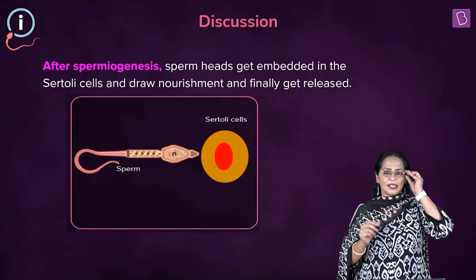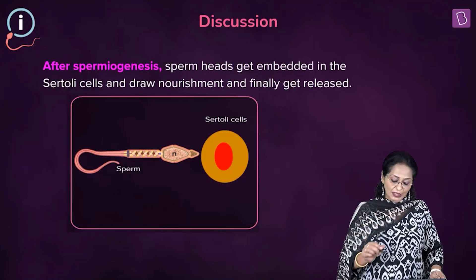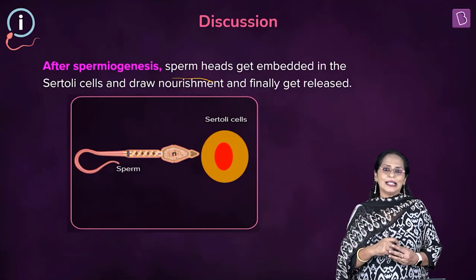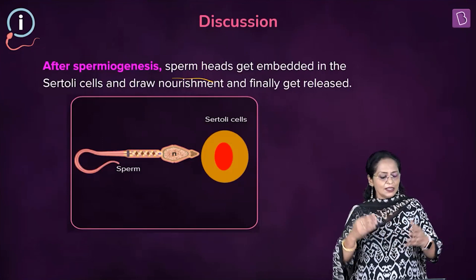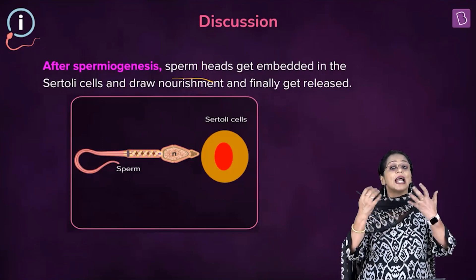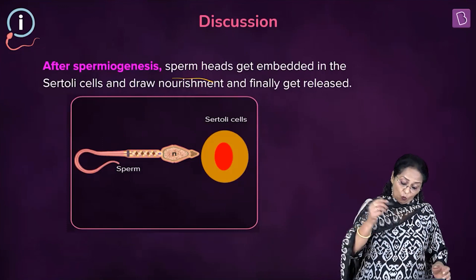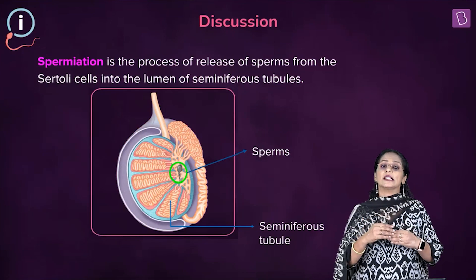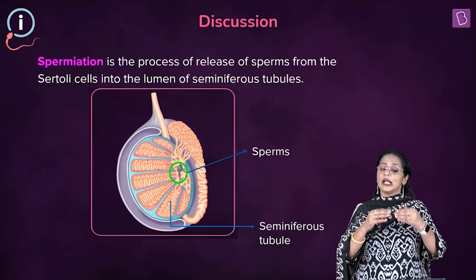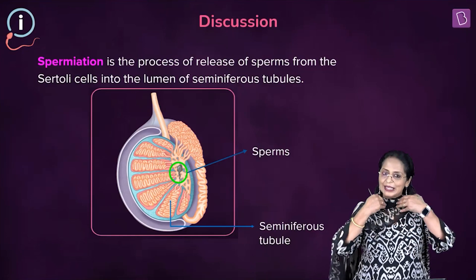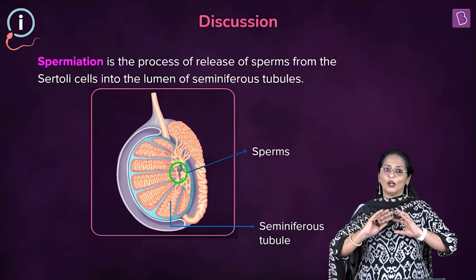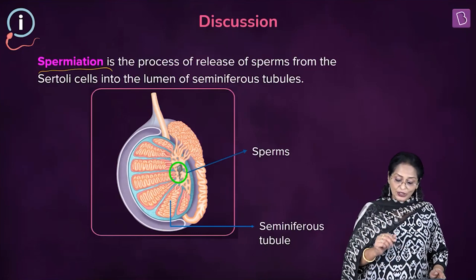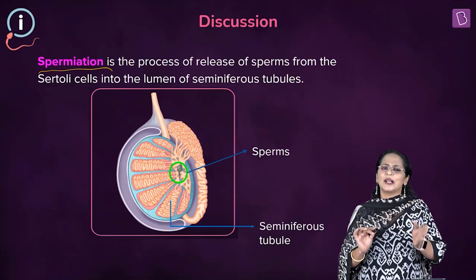After spermiogenesis, the sperms embed themselves into the Sertoli cells, also called nurse cells. The head of the sperm embeds itself into the Sertoli cells and obtains its nourishment. Once nourishment is obtained, it gets released from the Sertoli cells into the lumen of the seminiferous tubules. That process of release outside the seminiferous tubules is called spermiation. Sertoli cells are called nurse cells because they provide nourishment.